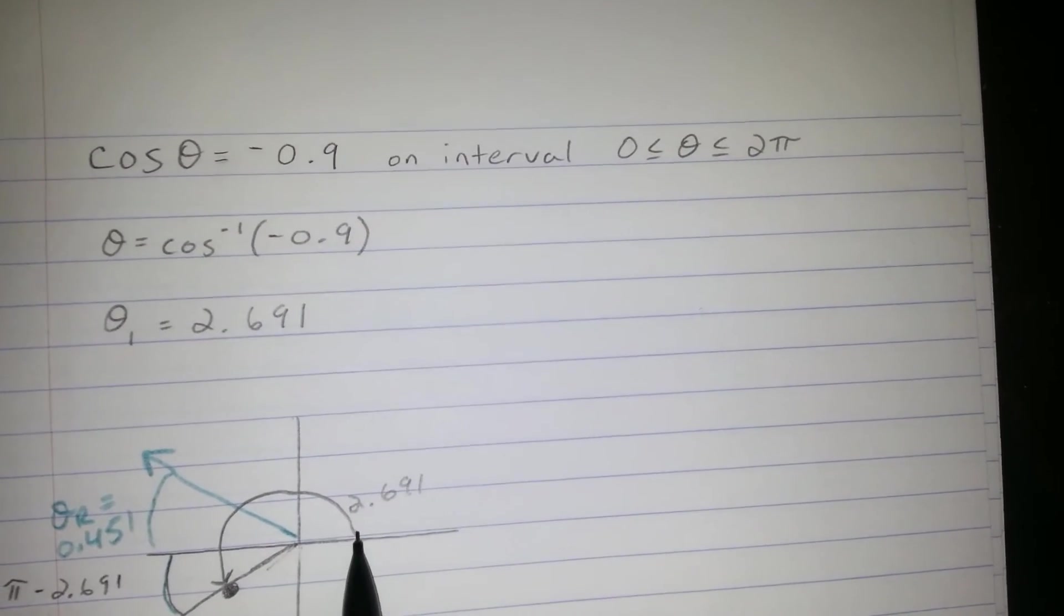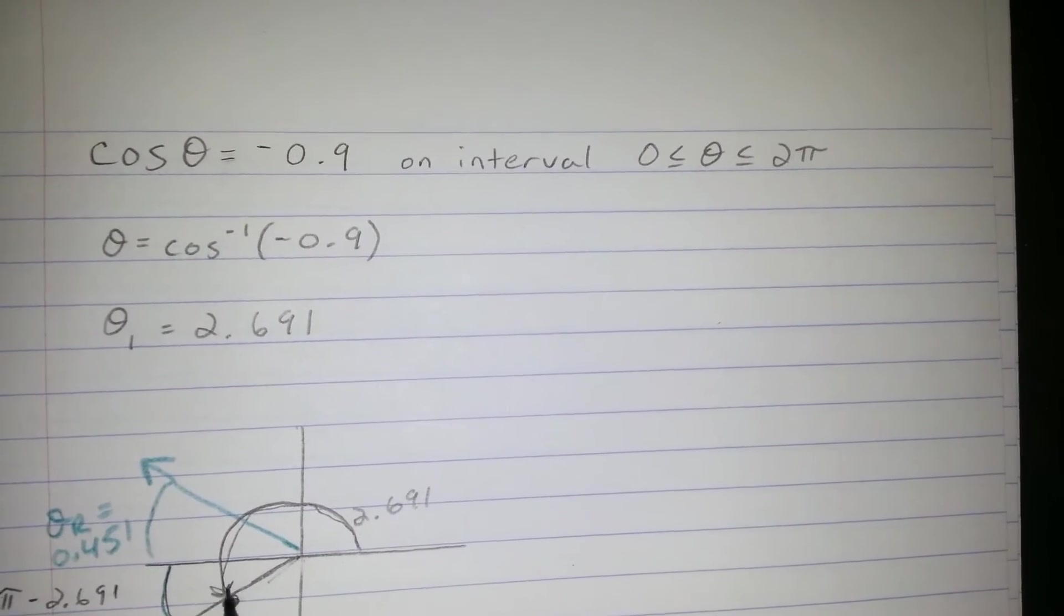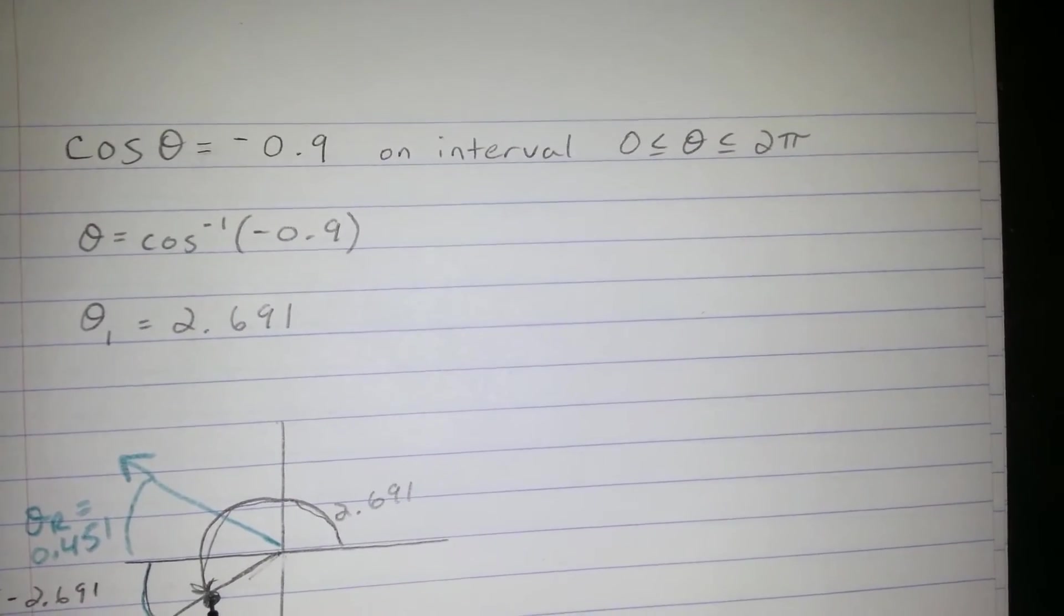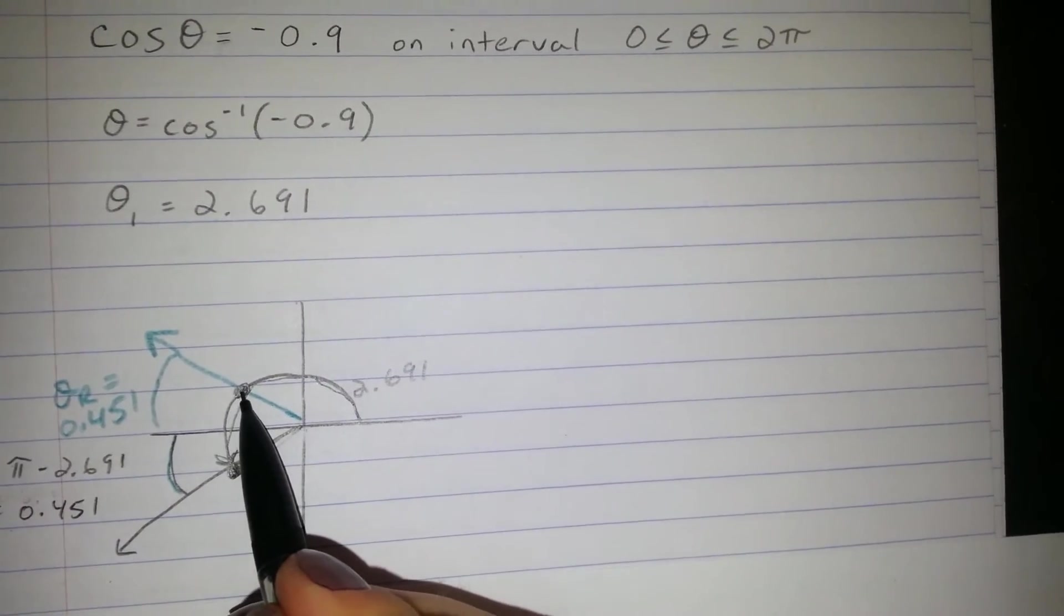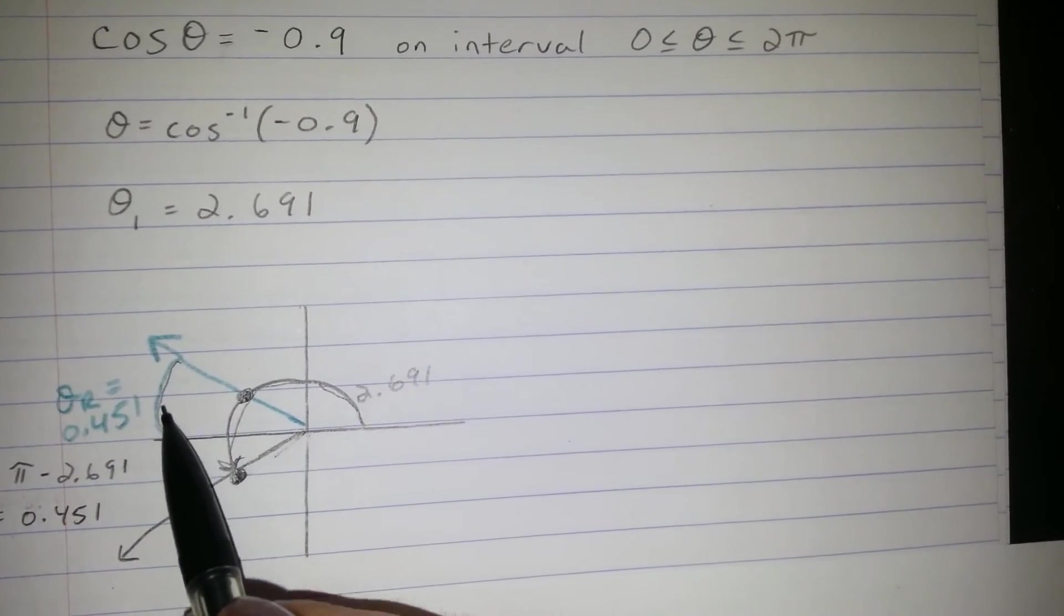On a graph, you can see here that the first angle gives us this point in quadrant 3, but there is a second angle over here in quadrant 2, which you can find just using the reference angle.